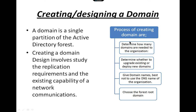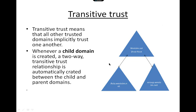Creating a domain design involves the study of application requirements and the existing capability of network communication. The process includes determining how many domains are needed in the organization and whether to upgrade existing or deploy new domains. The domain is given a name, a DNS name, and a forest root domain is chosen. Transitive trust means all domains need to trust each other, and when a child domain is created, a two-way transitive trust relationship is automatically created between the child domain and the parent domain.